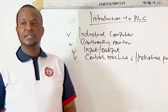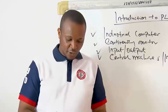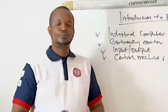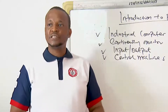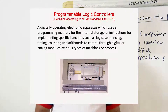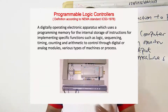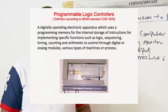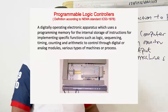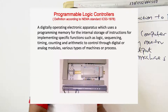Another definition of a PLC: it is a digitally operating electronic device which uses programming memory for the internal storage of instructions for implementing specific functions such as logic, sequencing, timing, counting, and arithmetic control through digital or analog modules connected to it.